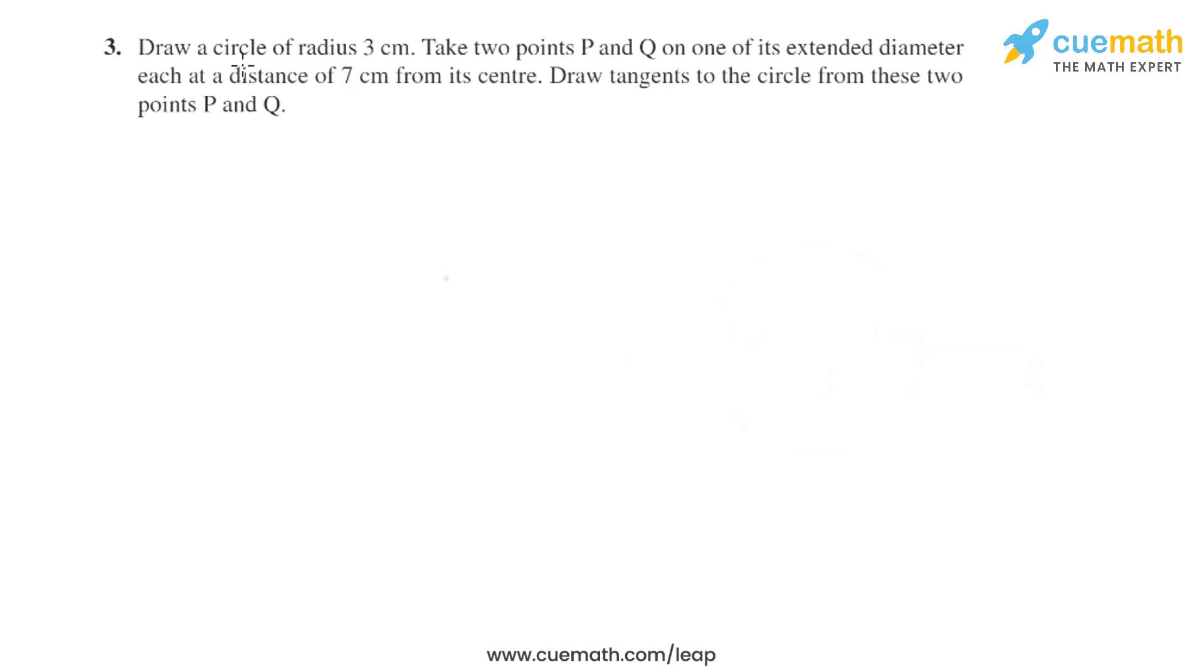Question 3 of this exercise says: Draw a circle of radius 3 centimeters. Take two points P and Q on one of its extended diameters, each at a distance of 7 centimeters from its center. Draw tangents to the circle from these two points P and Q.